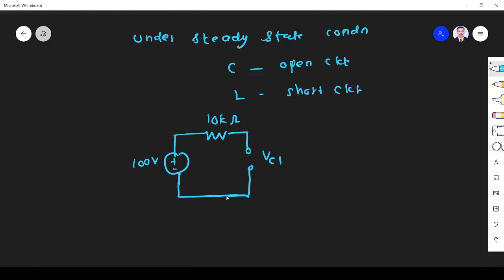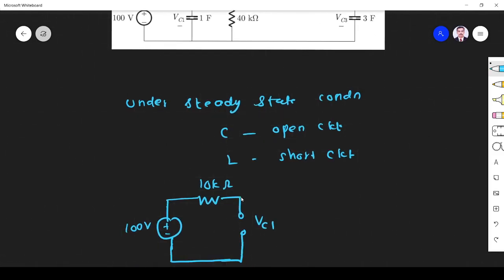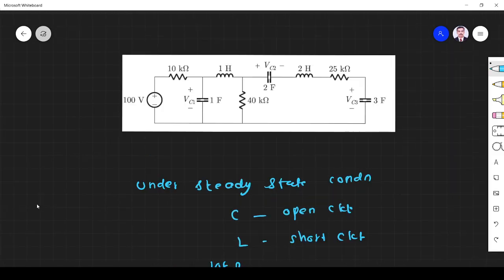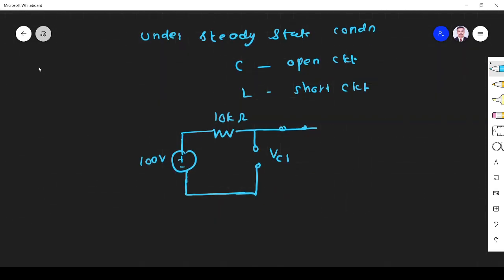Capacitor is open circuit. Henry inductor, inductor is short circuit. Next 40 kilo ohm, this is 40 kilo ohm.